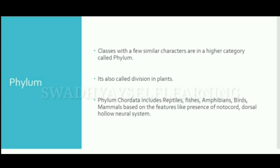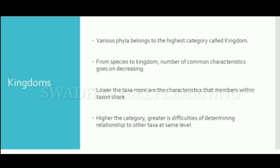Phylum is a higher category — also called division in plants. Classes with a few similar characters are grouped into phylum. Phylum Chordata includes reptiles, fishes, amphibians, birds, and mammals, based on features like the presence of a notochord and a dorsal hollow neural system.